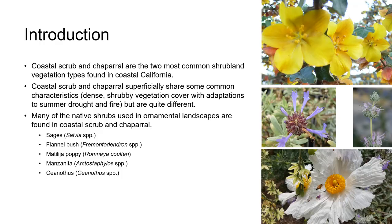Hi everybody and welcome to this unit on Coastal Scrub and Chaparral. Coastal Scrub and Chaparral are the two most common shrubland vegetation types found in California, and these two plant communities share some common characteristics. They both have dense shrubby vegetation with adaptations to summer drought and fire, but as you'll see, these two plant communities are actually quite different.